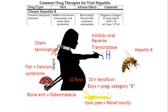To remember the name tenofovir, I have a picture of a pregnant woman, and in her womb there are 10 boys — kind of like Octomom except she's going to have 10 instead of 8. So: 10 boys for B. The 10 helps you remember tenofovir, the pregnancy helps you remember pregnancy category B, and the boys helps remember the B part.